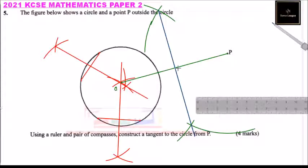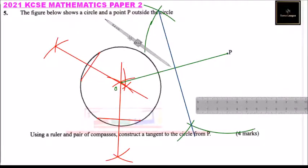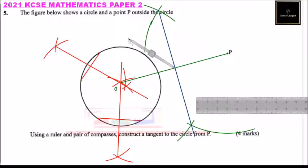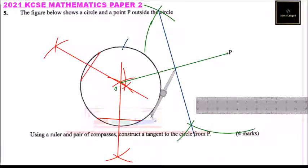This midpoint is the center for the next step. You take your compass and use the distance from this midpoint to O as the radius. You make a mark at the circumference of the circle and repeat the same on the other side.